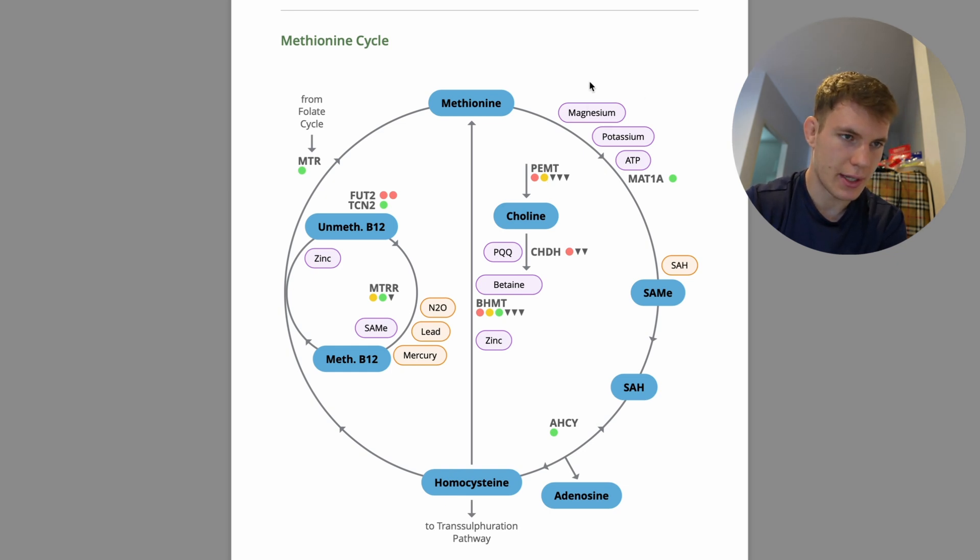Now, these bits here, the purple bits, these are elements that are going to help the cycle. For example, the methionine cycle, from methionine to SAMe, magnesium, potassium and ATP are great for that. SAH is not. When you see the elements in orange, they're bad. The ones in purple, they are good for you.